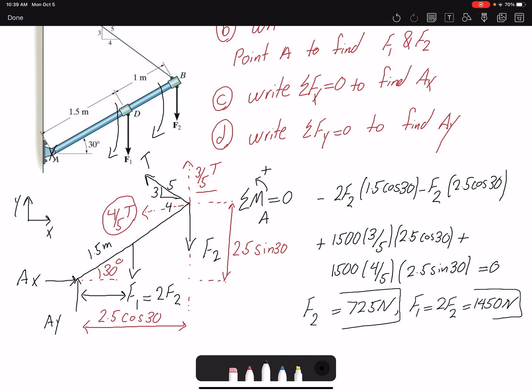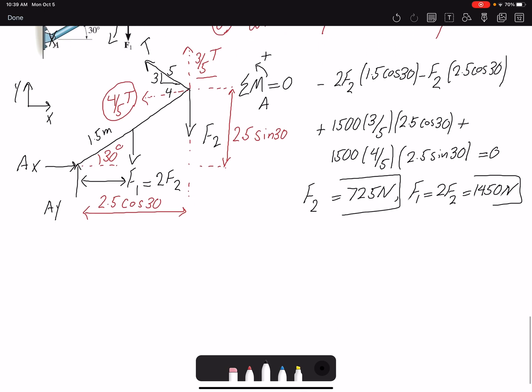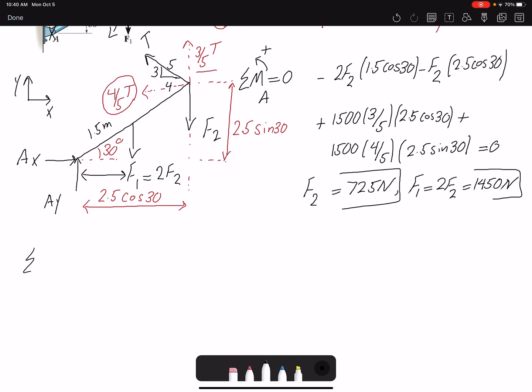If you want to find the reaction forces Ax and Ay, we just write summation of forces in x equals zero. I have Ax minus 4/5, the horizontal component of my tension which is 1500, equals zero. Therefore Ax would be 1200 Newtons.